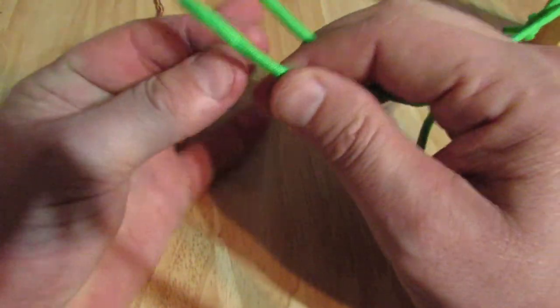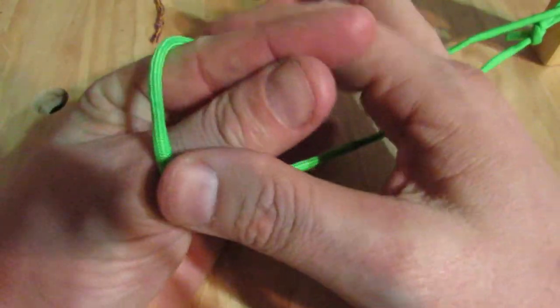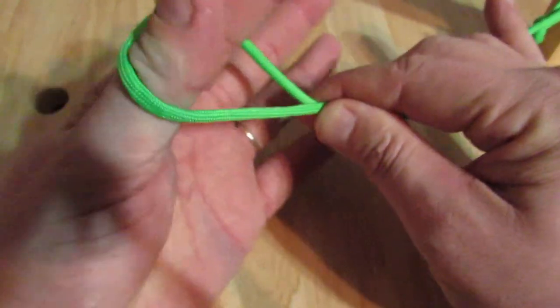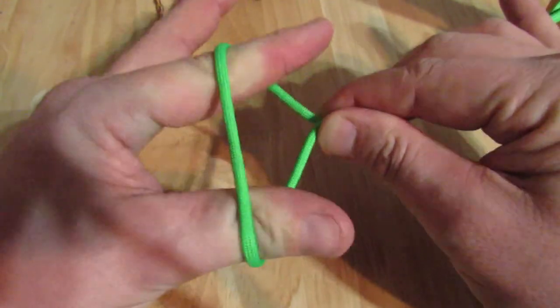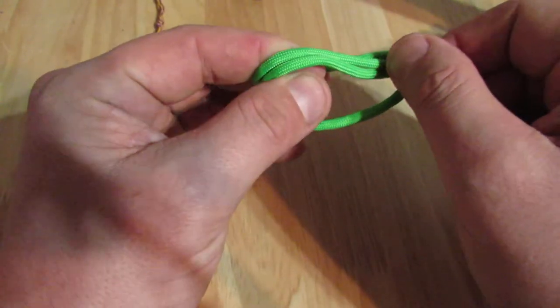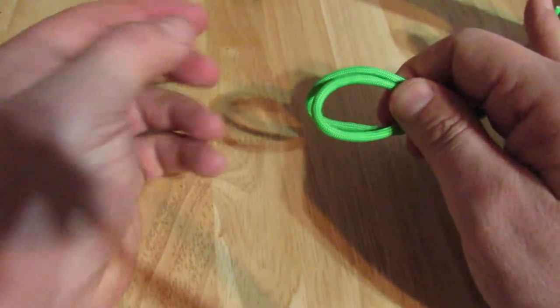So again, basically all you're doing is you're just taking the loop, putting it over your index and your thumb. If you need to pinch it down here, you're going to just take your fingers, reach down and around and pinch them, pull this down off your fingers so that you have that loop.